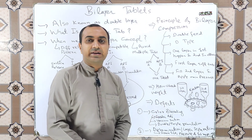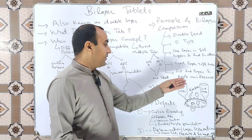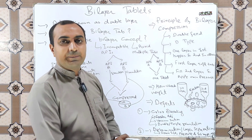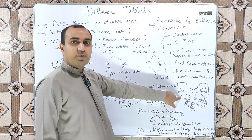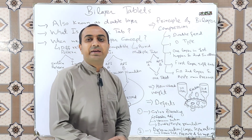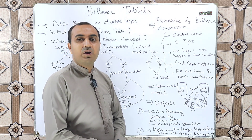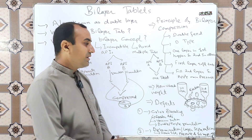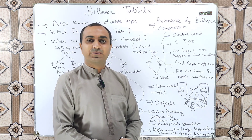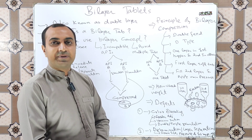Hopper one contains the granules of the first layer, which contains API one. Hopper two contains the granules of the second layer, which contains API two. First, granules or powder from the first hopper are filled into the dies, and we apply a small amount of pressure using pre-compression rollers to compress a soft tablet. For the first layer, we apply just a little pressure to manufacture a soft tablet — this is the layer one tablet or first API-containing tablet.